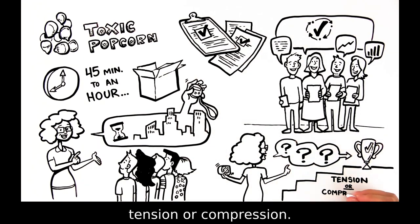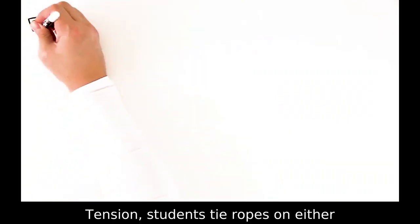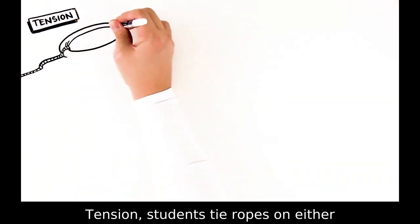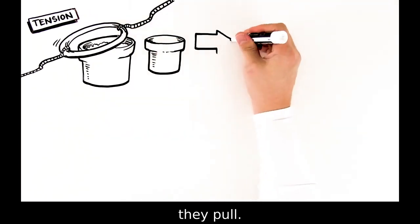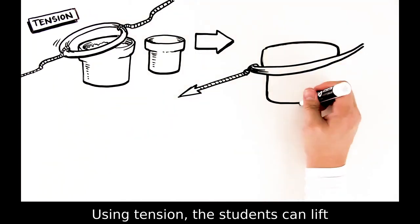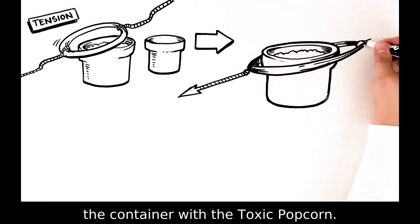Successful solutions include using tension or compression. For tension, students tie ropes on either side of the tire tube, and once it's around the container, they pull. Using tension, the students can lift the container with the toxic popcorn.